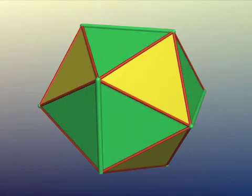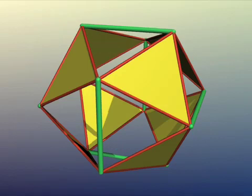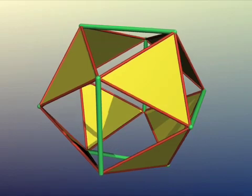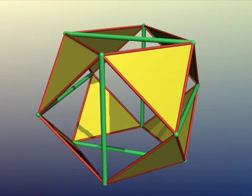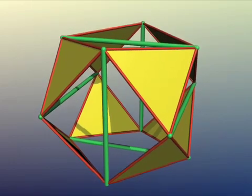Highlighting the 6 extra edges of the icosahedron, we can let them follow along in the jitterbug. They become face diagonals of the cube octahedron and then internal diagonals of the next icosahedron.